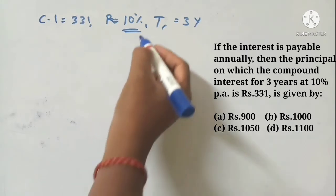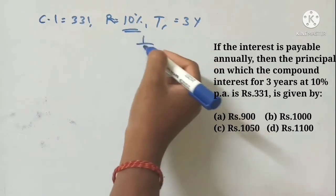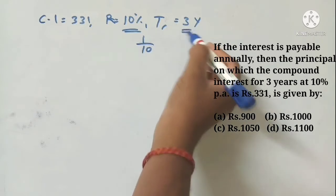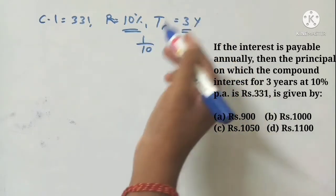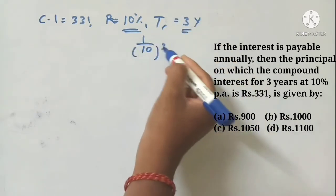Principal, the rate is 10% which equals 1/10, so the time will be 3 years, then 10 will be cubed.